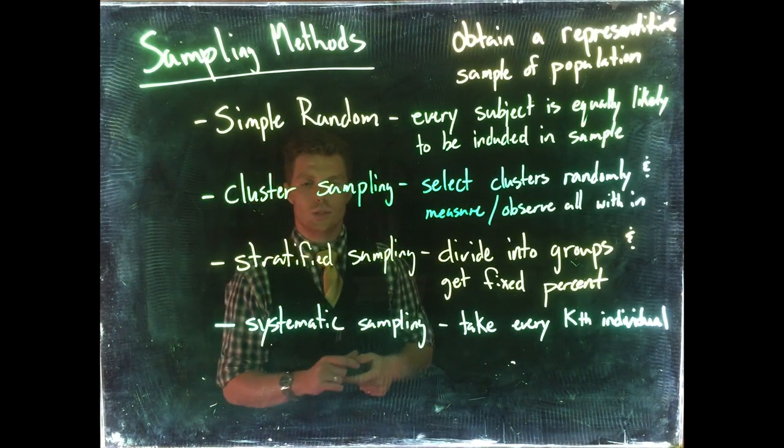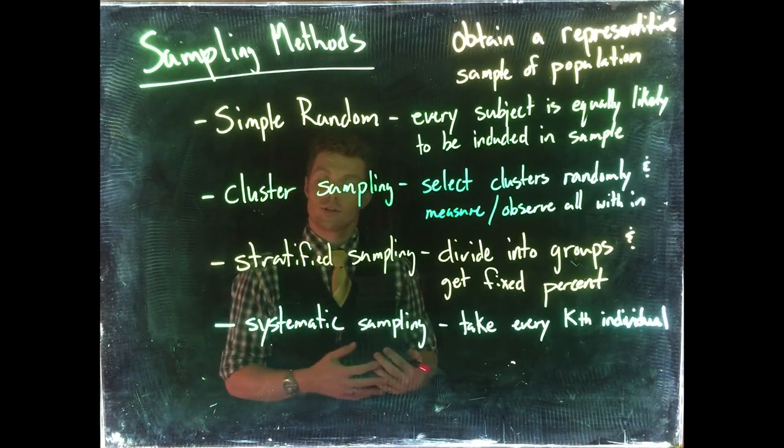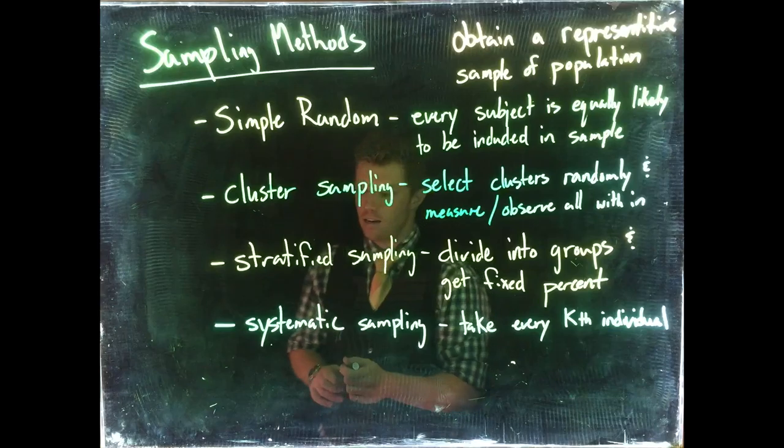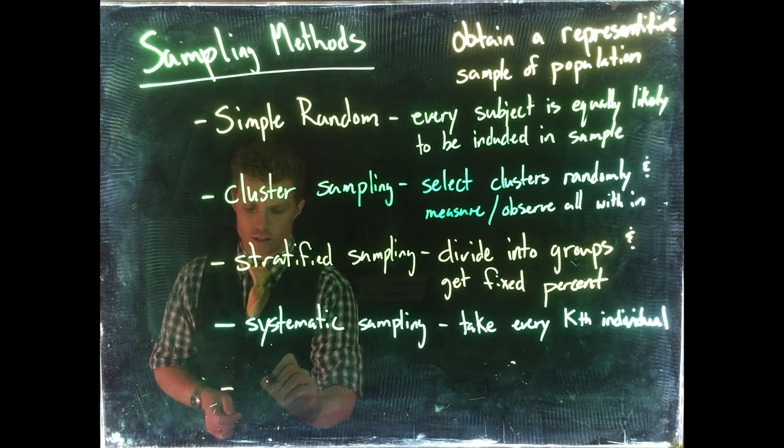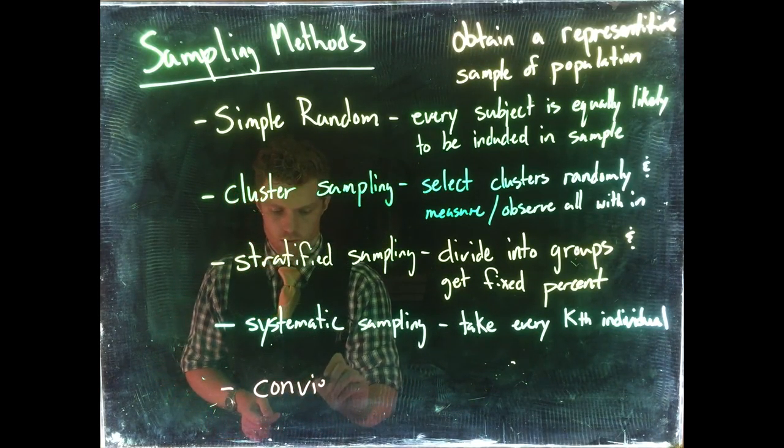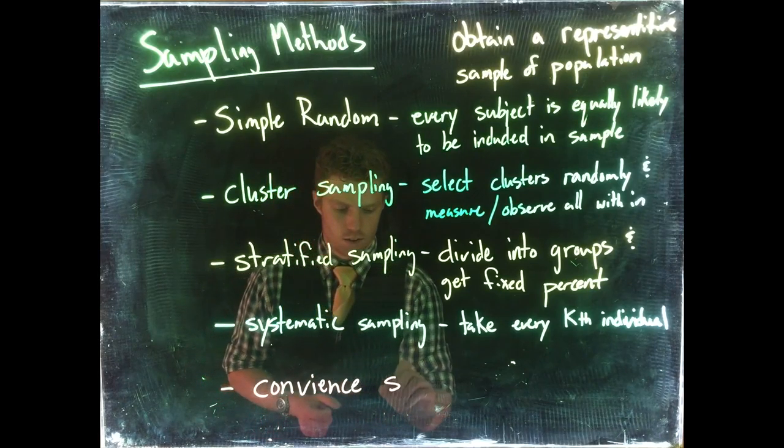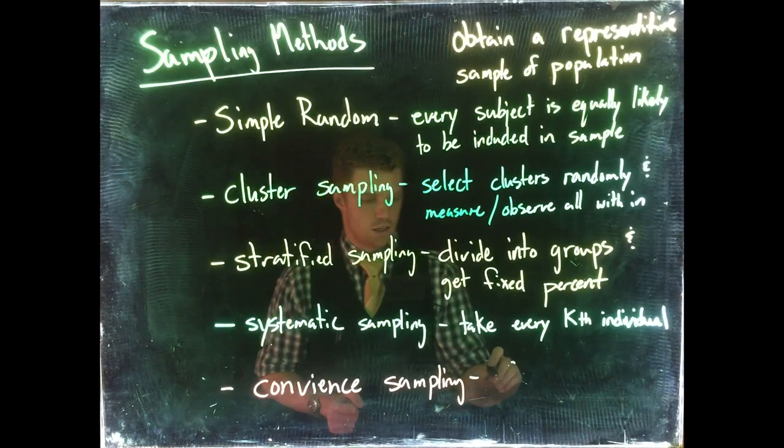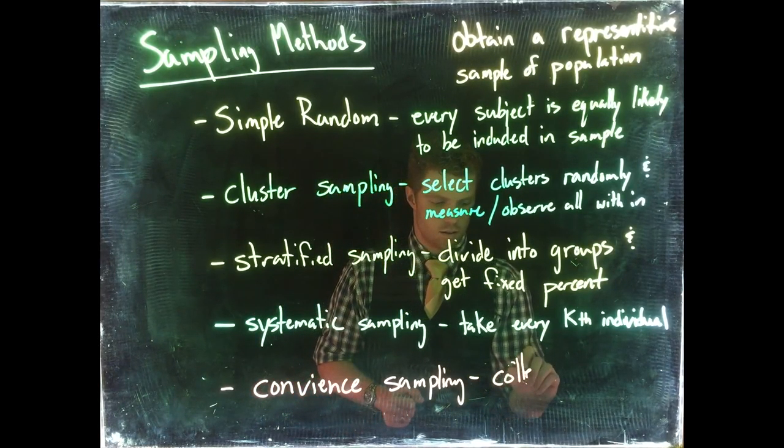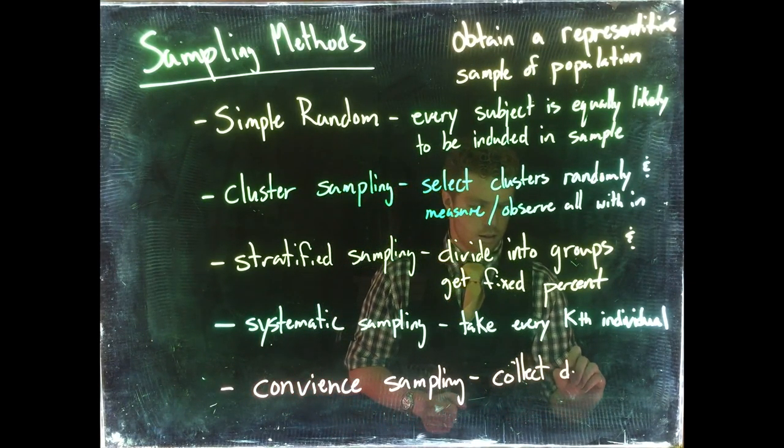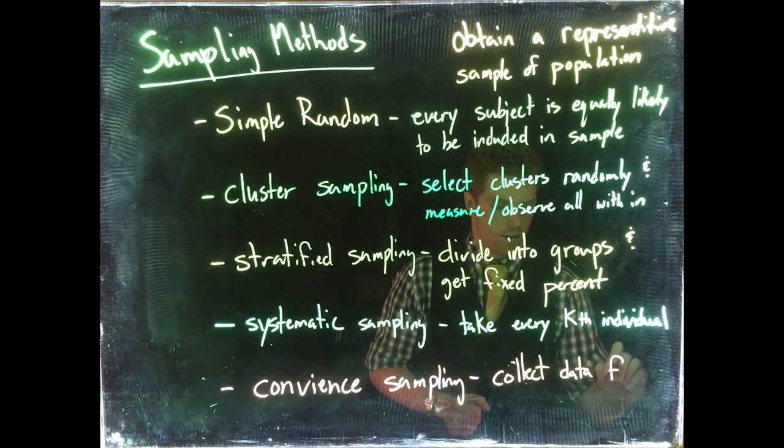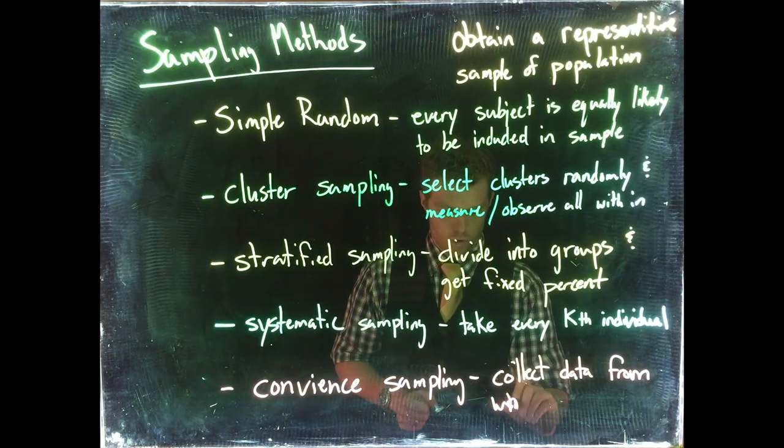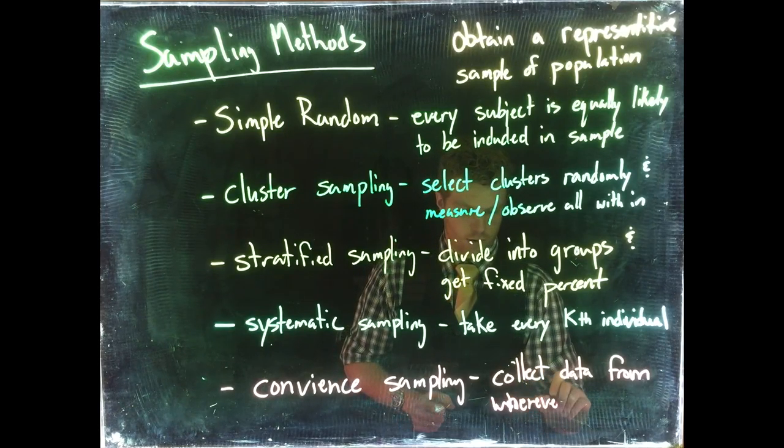These can be good ways to get a sample that is representative of your population. Now there is a bad version we should probably talk about too, and it's called convenience sampling. Convenience sampling: here we just collect data from wherever convenient.